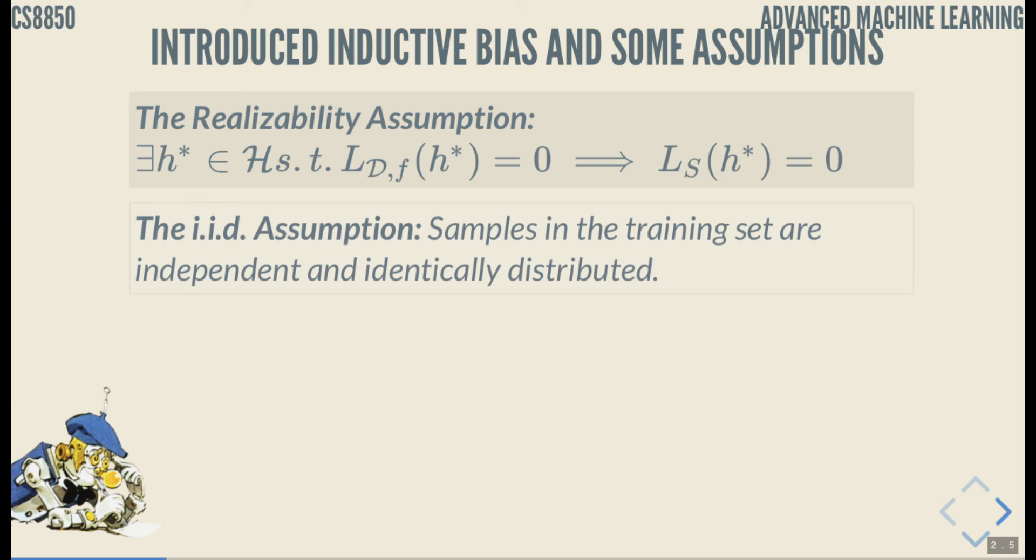We also introduced an i.i.d. assumption. Samples in the training set are independent and identically distributed. This assumption is with us for a long time. Leslie Valiant introduced PAC learning in 1984, and now in 2020 we're still with that assumption. And only now people are starting using machine learning algorithms a lot in real life, in real applications, and we're learning that we have to do something about this assumption because most of the data in the real world doesn't satisfy i.i.d. But that's 36 years later. Let's just stick to the i.i.d. assumption in this lecture. Independent, identically distributed, IID.